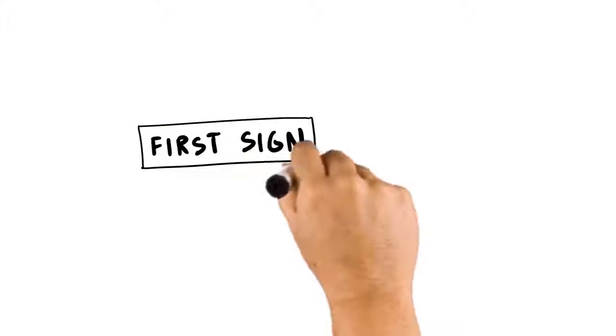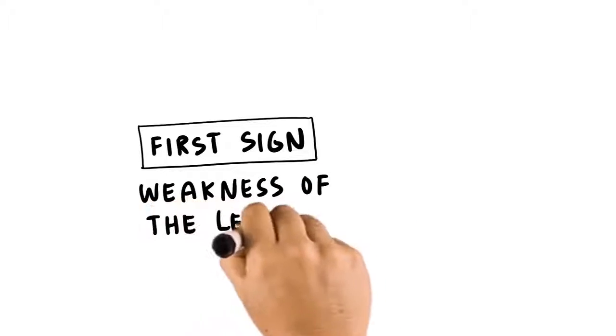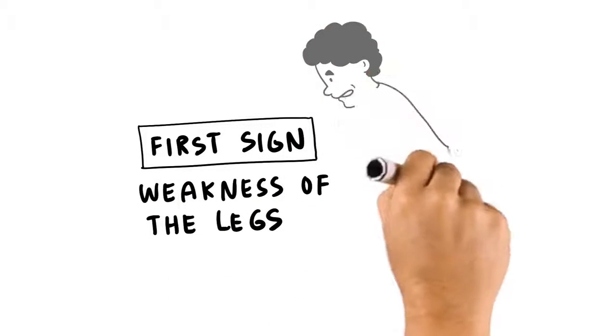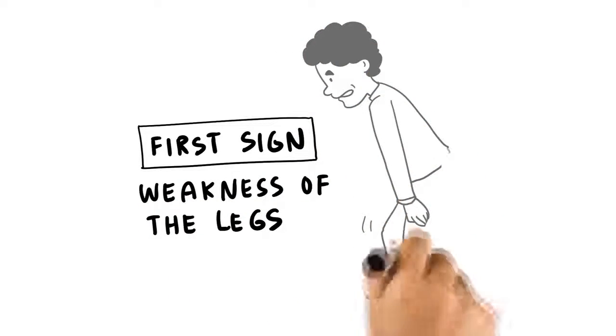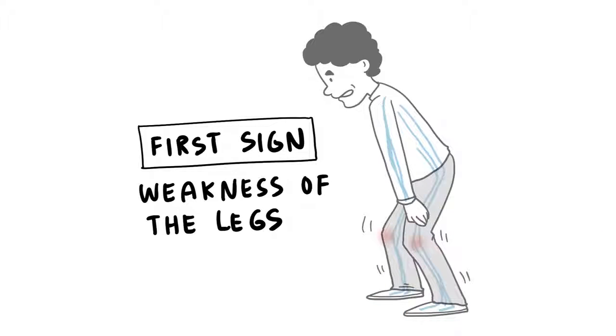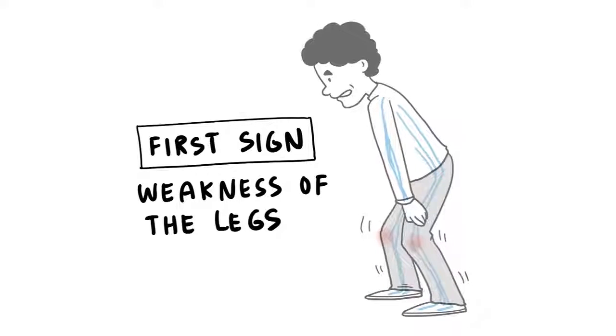The first signs of GBS are often a weakness or tingling in your legs. Think about it. The nerves in your foot extend all the way up to your brain. There's a lot of places for a message to get lost.